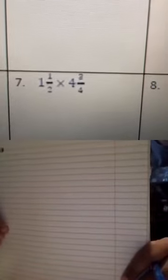A student explained: for number seven, I took the mixed numbers and multiplied the denominator by the whole number, then added the numerator to get the improper fraction. Then I multiplied the two improper fractions together. For one and a half, she got three-halves. For four and three-fourths, the answer was eleven-fourths — or rather, she confirmed it as nineteen-fourths after working through it.